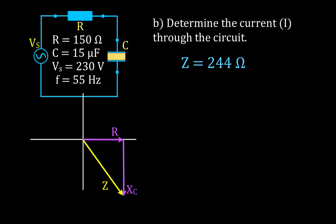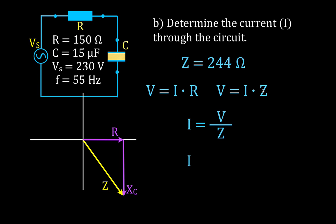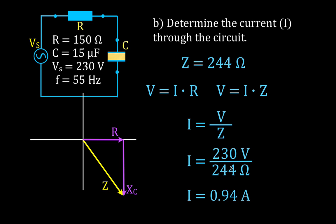Next, we determine the current through the circuit. We use Ohm's Law in the form V equals I times Z — using impedance rather than just resistance, since impedance is the total opposition to current flow. That means I equals V divided by Z, which is 230 volts divided by 244 ohms, giving a current of 0.94 amperes. If the source voltage is RMS, this is RMS current; if peak, this is peak current — don't mix them up.